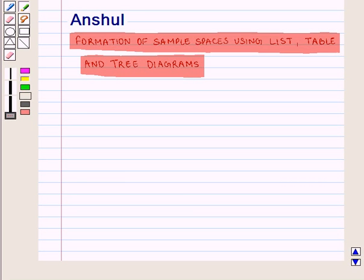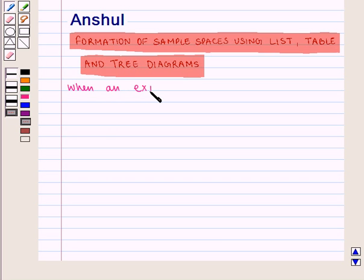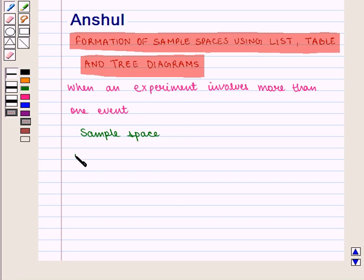Hello and welcome to the session. In this session we are going to discuss formation of sample spaces using list, table and tree diagrams. When an experiment involves more than one event, then the sample space can be described using list, table and tree diagram.